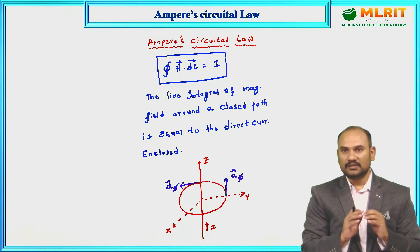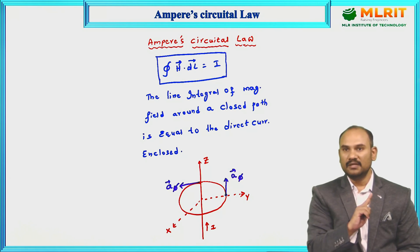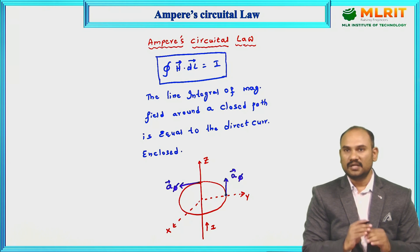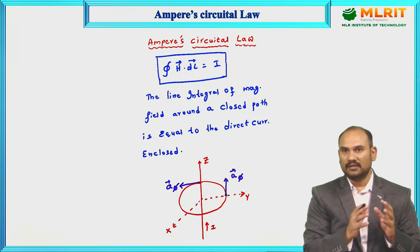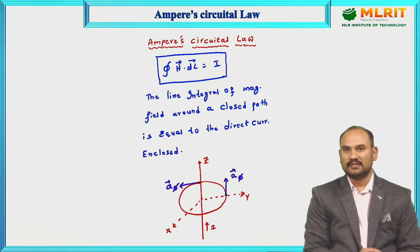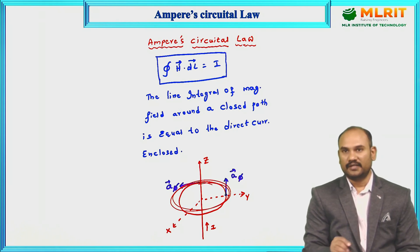In Gauss's Law, we assume a sphere called the Gaussian sphere. In Ampere's Circuital Law, we assume a circular path — geometrically, a circle. That circular path is referred to as the Amperian path. The imaginary sphere in Gauss's Law is named the Gaussian sphere; here the imaginary circular path is called the Amperian path.